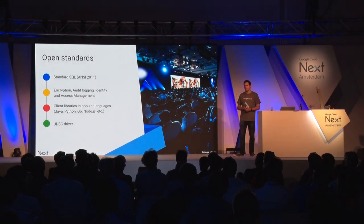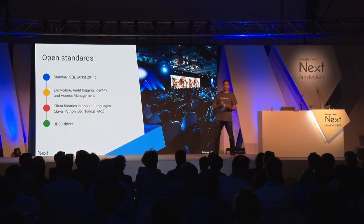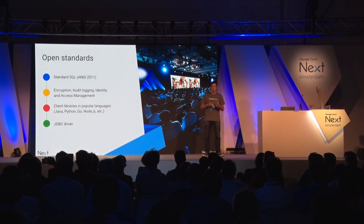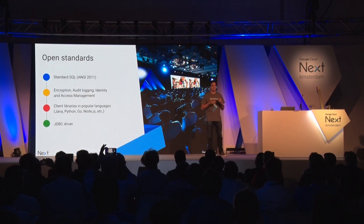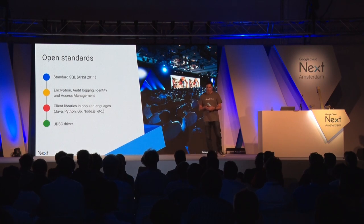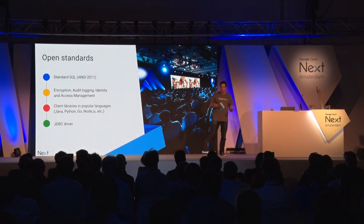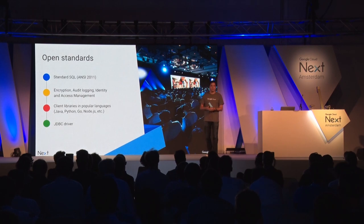One of the things we get asked a lot is what was the hardest part of bringing Spanner from an internal product to a cloud product. One of the things we worked hardest on was making it open - Google is very much about being an open cloud and meeting you where you are. The first thing we started with was using standard SQL. A couple of years ago we looked at our products and said we were kind of all over the map with SQL standardization, so we decided to standardize on ANSI SQL 2011 with extensions.